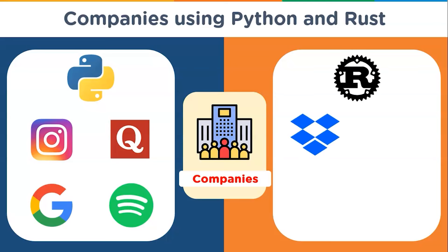Now moving on to companies using Rust: Dropbox is a file hosting service that uses Rust for parts of its file synchronization engine. The engine is highly concurrent and they chose Rust over other languages. Cloudflare is an American web infrastructure and website security company that uses Rust as a core language — they have replaced C with Rust for its memory-safe features.